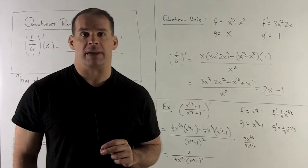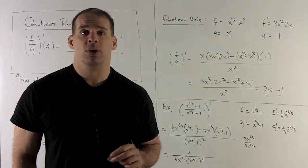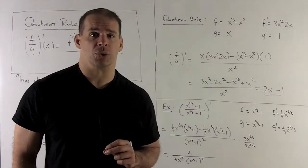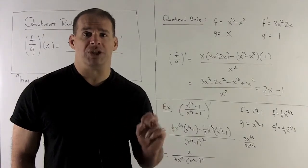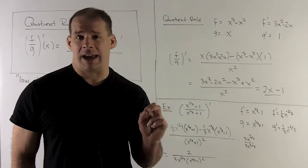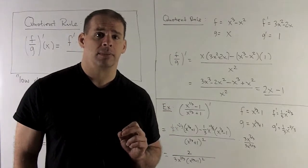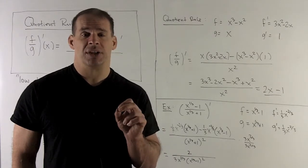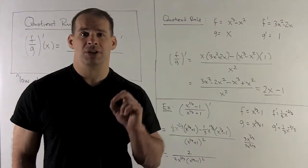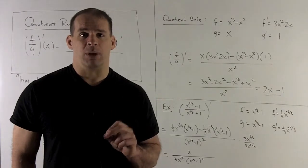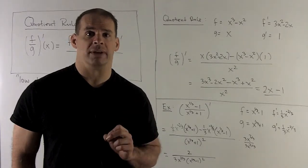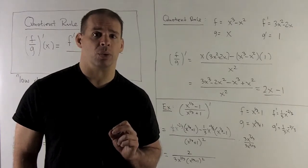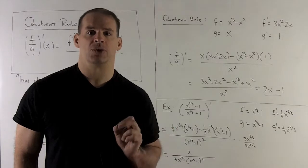Now let's try an example where we can't simplify things first: (x^(1/3) - 1) / (x^(1/3) + 1). I have no tricks to clean this up, so I'm stuck with the quotient rule. Setting up f, g, f prime, and g prime: using the power rule, x^(1/3) gives (1/3)x^(-2/3) for both f prime and g prime (the constant ±1 terms vanish). Then I apply low d high, less high d low, over low squared.